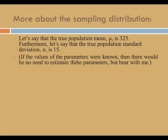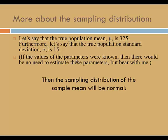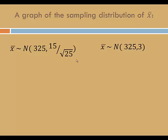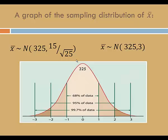Now, of course, if the values of the parameters were known, then there would be no need to estimate these parameters. But bear with me. Given the population mean of 325 and population standard deviation of 15, the sampling distribution of the sample mean will be normal, centered at 325, with standard error of 15 over the square root of 25 — in other words, x bar will be normally distributed with mean 325 and standard error 3. The center is 325. One standard deviation in either direction gives 322 and 328. Two standard deviations in either direction brings us to 319 and 331. And three standard deviations in either direction will take us to 316 and 334.